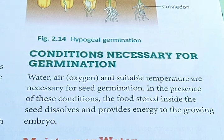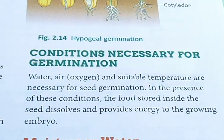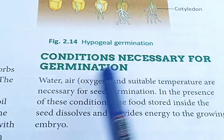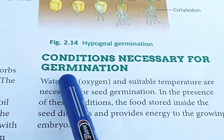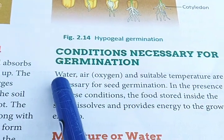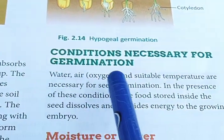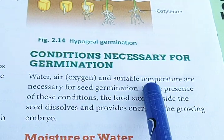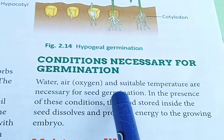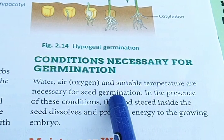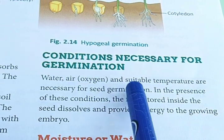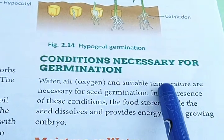Good morning students, welcome back to the biology classroom. Today I will start from conditions necessary for germination. Look at the book — water, air, and suitable temperature: three conditions are necessary for seed germination. So what are the conditions? Water, air, and suitable temperature.